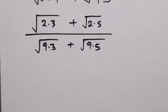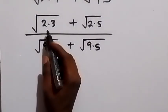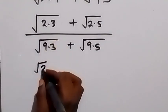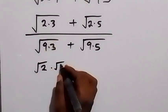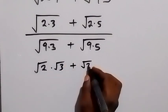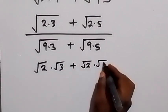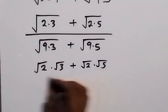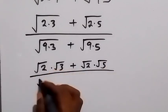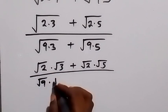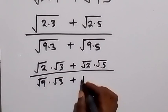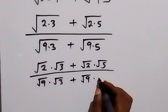In the next step we can break this apart: this can be written as root 2 times root 3 plus root 2 times root 5, then divided by root 9 times root 3 plus root 9 times root 5.